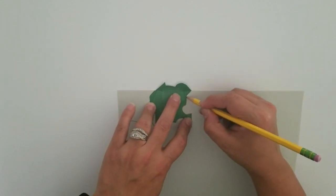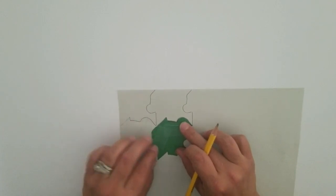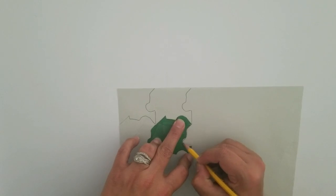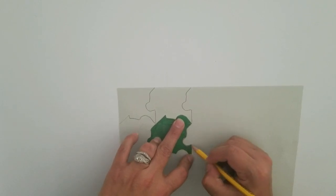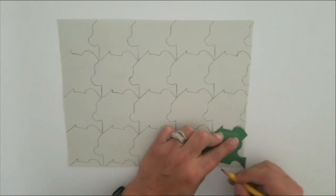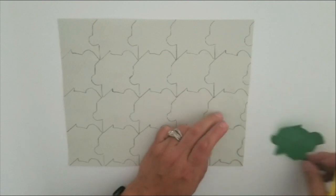As you can see, I'm tracing the puzzle piece or the original shape. You can even slide it in any direction and be able to trace it onto the paper. Trace your original piece until you fill up your entire 8 by 10 inch sheet of paper.